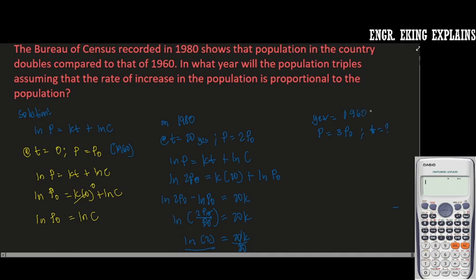So this will be 1960 plus T. So we need to find first our T.